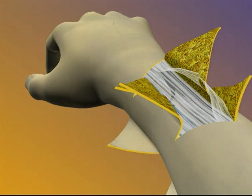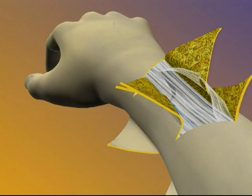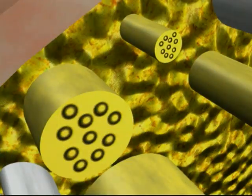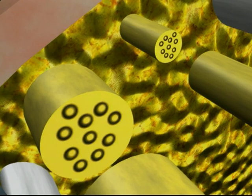After all the tendons have been connected, the surgeons are ready to repair the nerves. A powerful microscope is brought into the surgical field to provide the surgeons with a highly detailed view of the nerves.